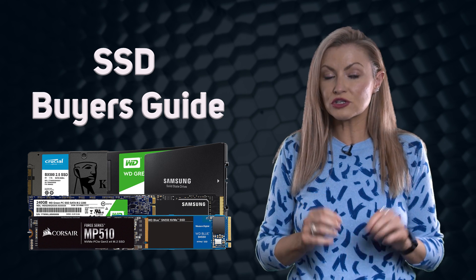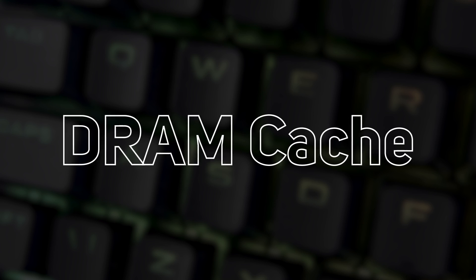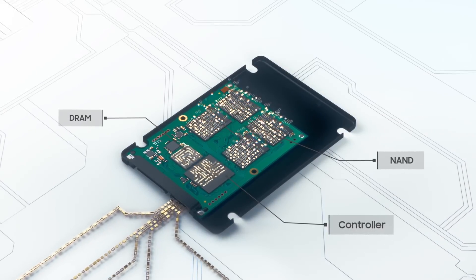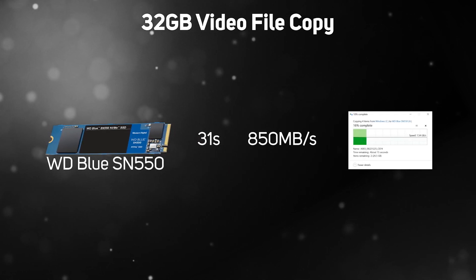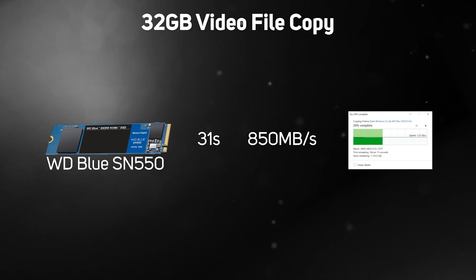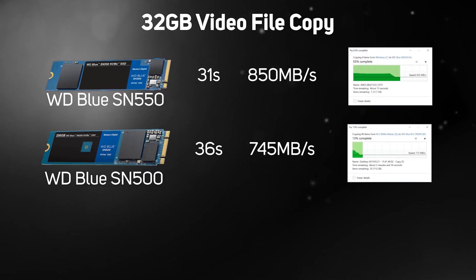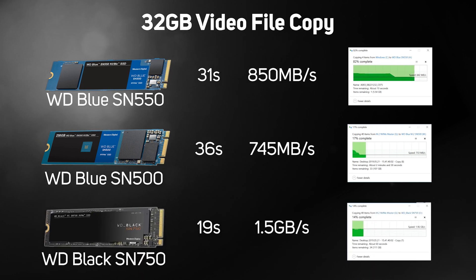High-end SSDs tend to have a cache of DRAM that's extremely fast, allowing a huge speed bump for smaller write operations. If you're copying a larger file, you'd see the speed start very high, and when the cache is full the speed drops down to a sustained level. This way, for general operation, you get super fast speeds.